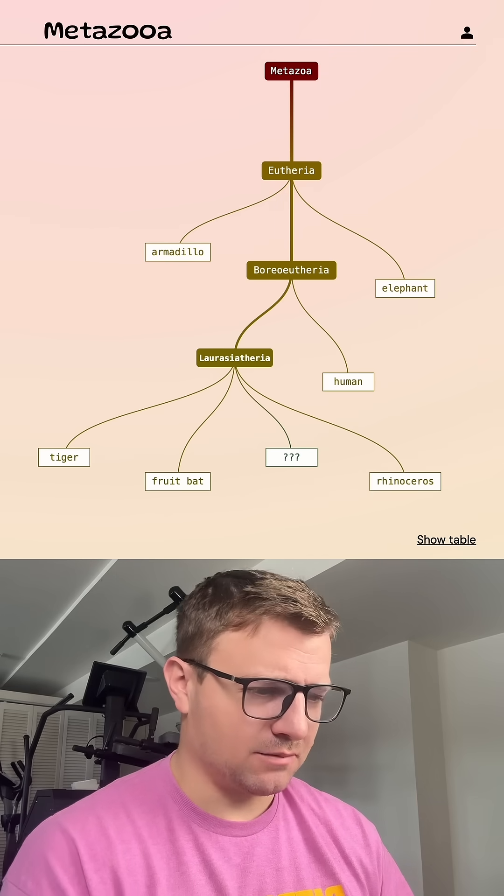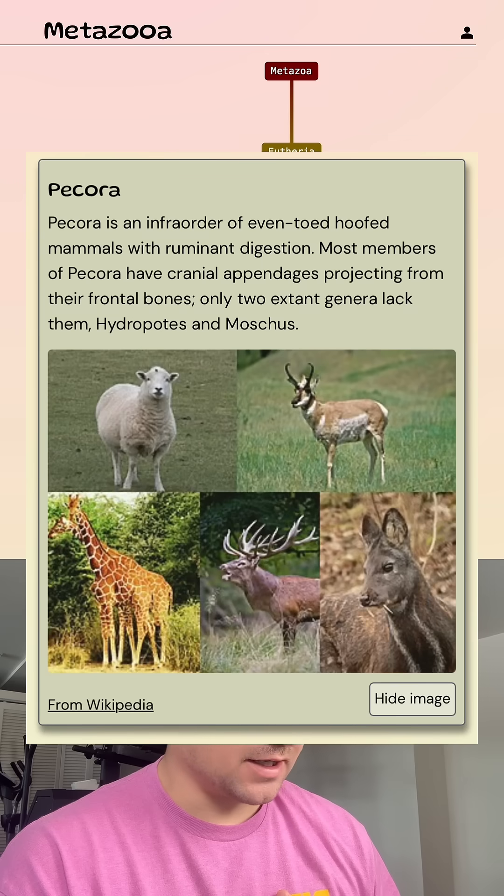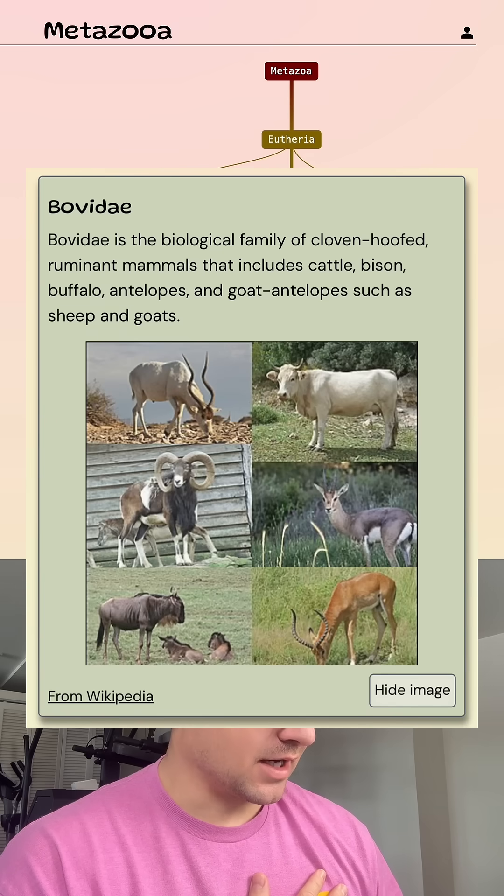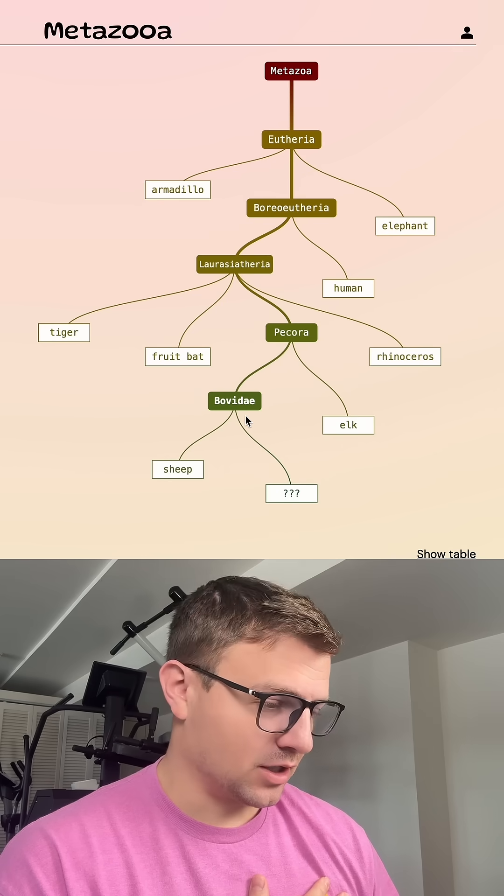Let's go like elk, maybe. Pecora. Very nice. Pecora. Maybe sheep. So bovidine. Okay, or bovidae. That's good.